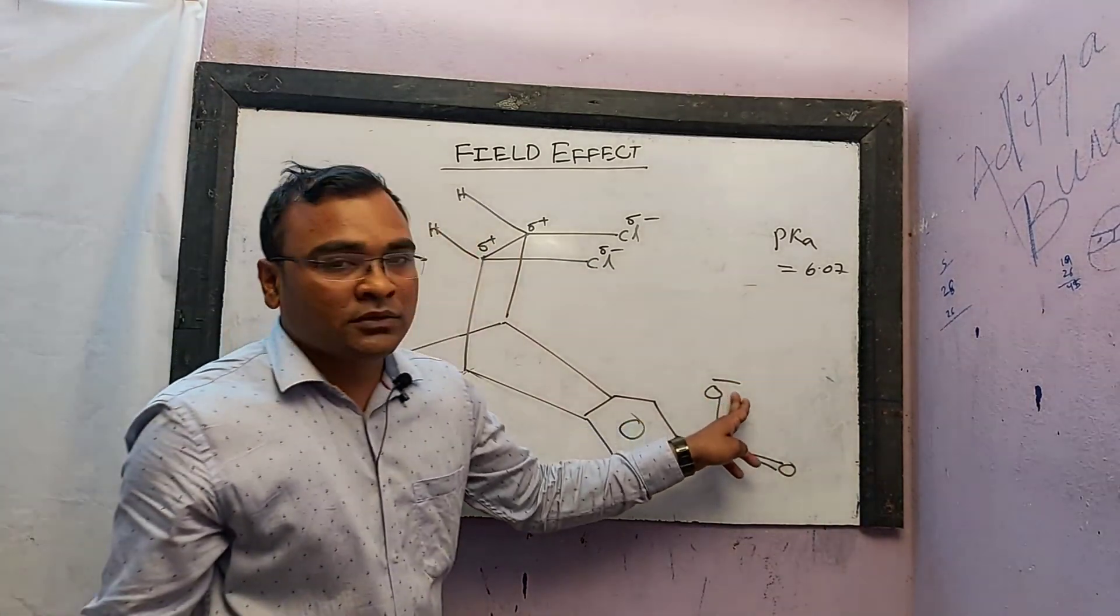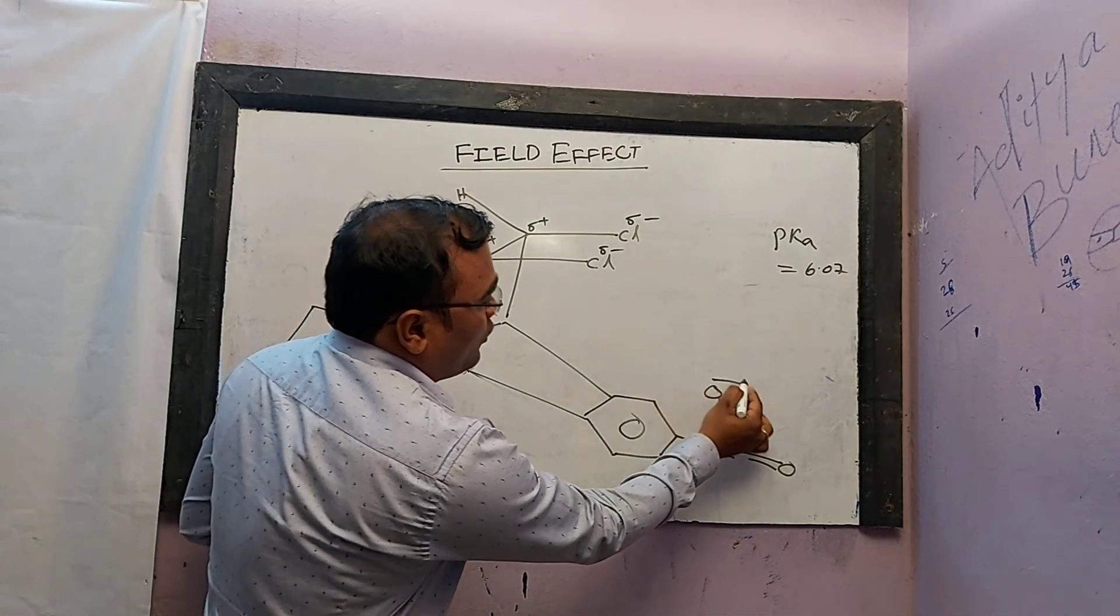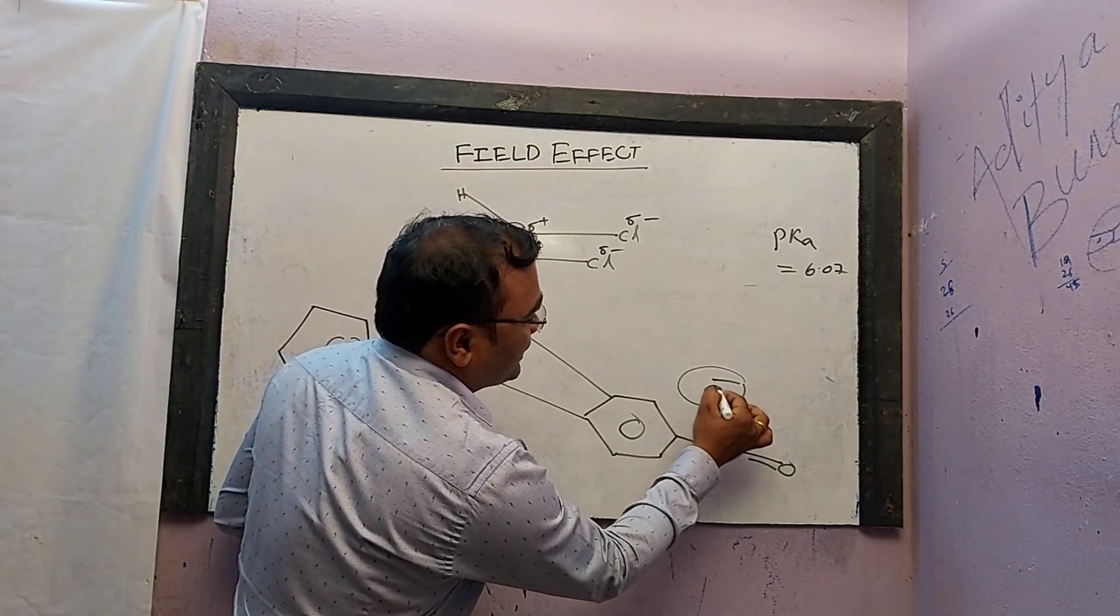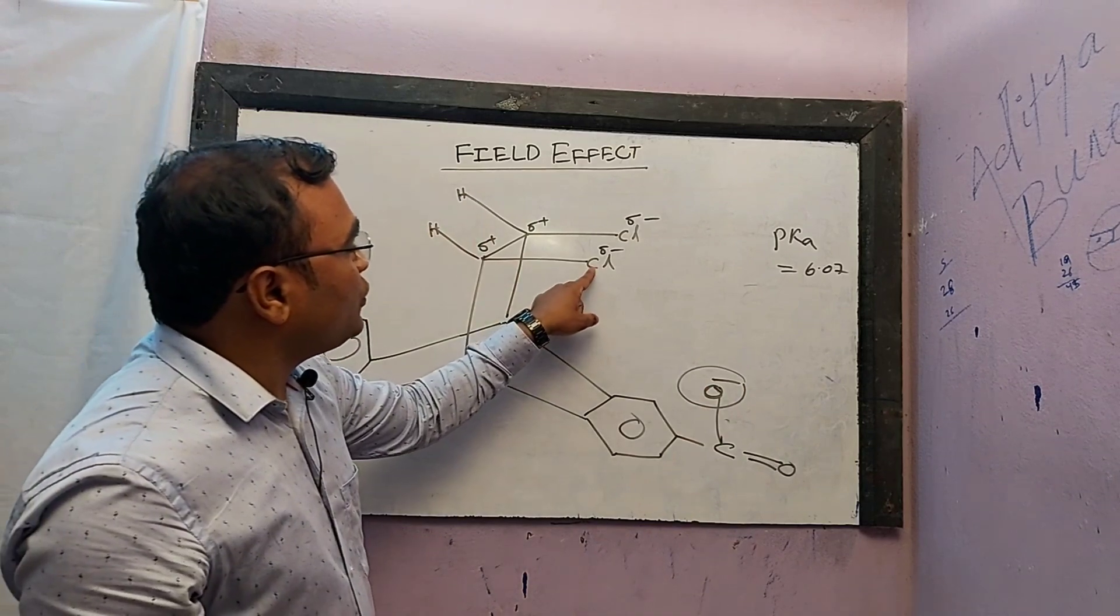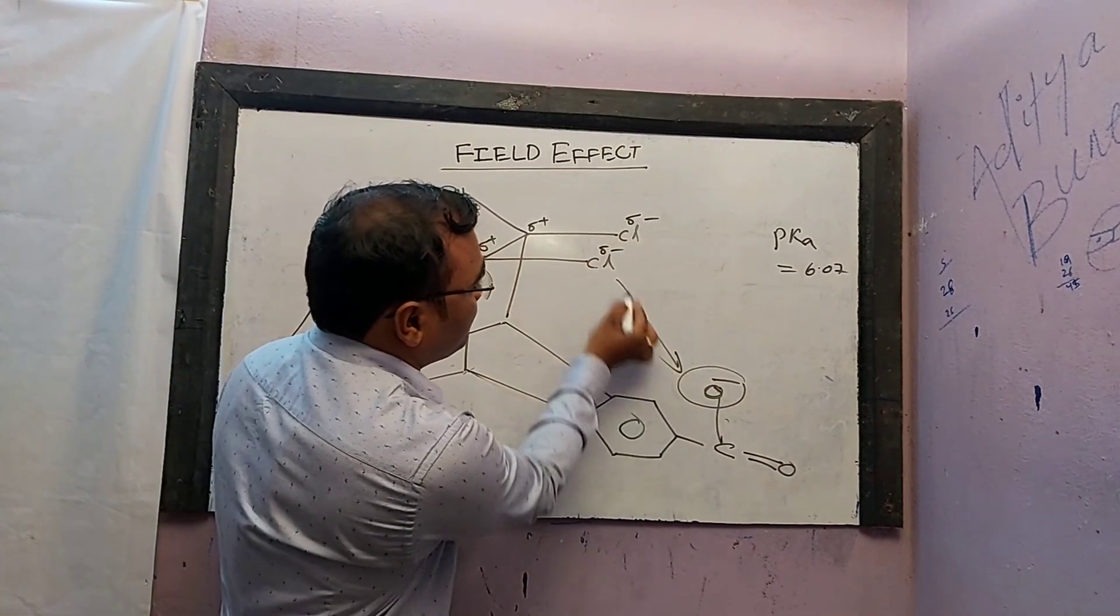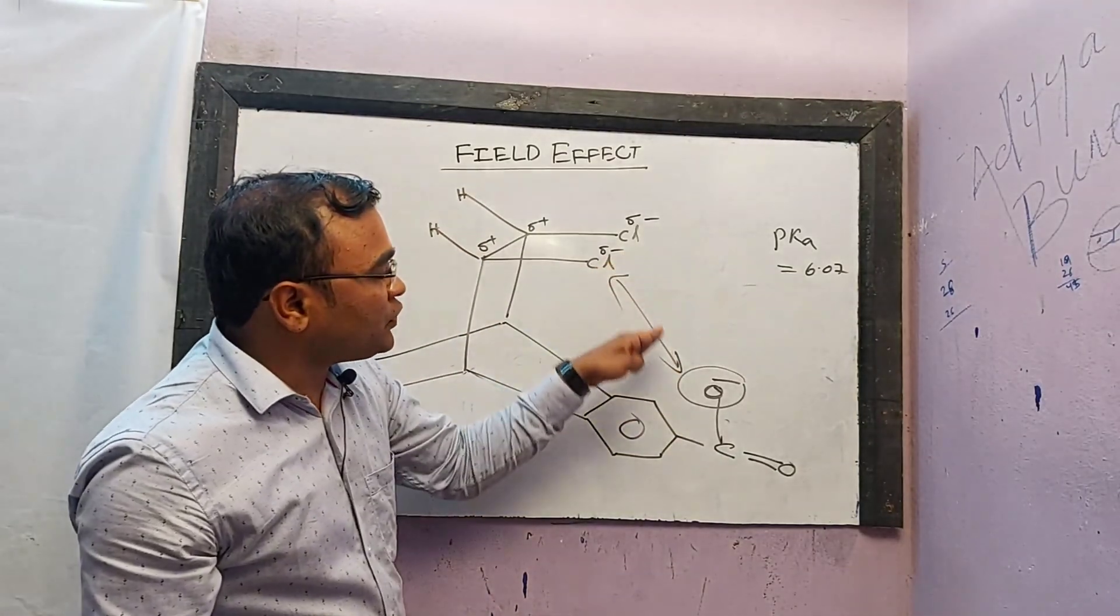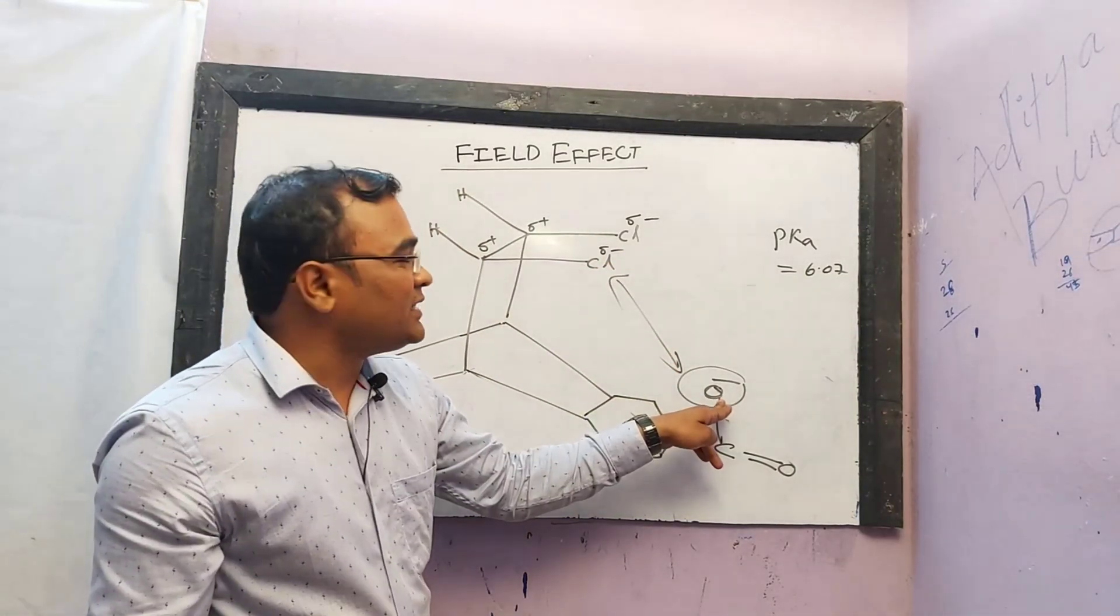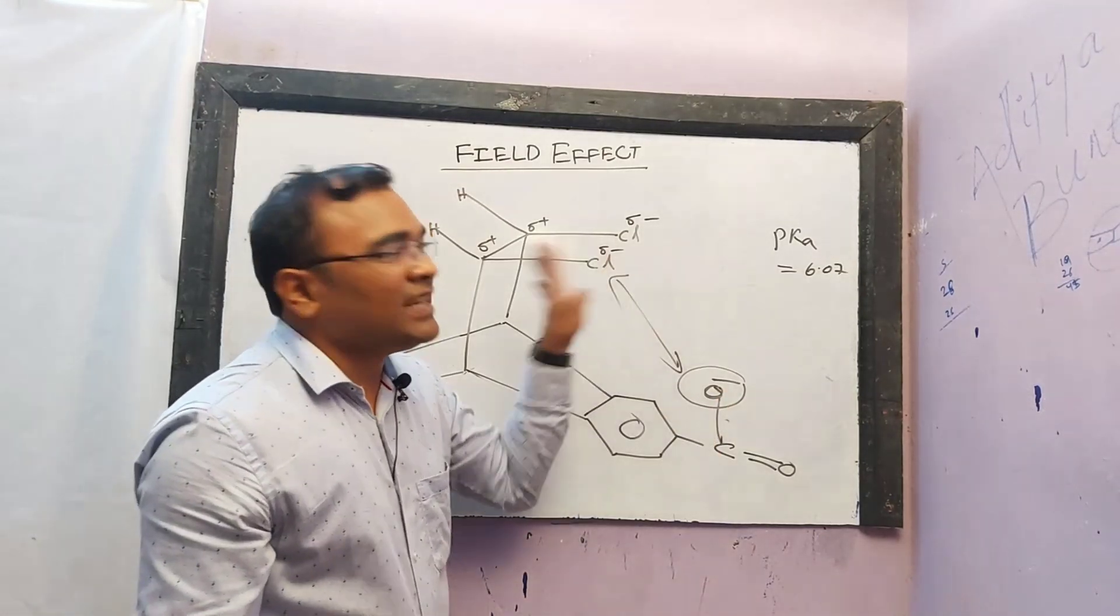This is O minus. Here, the O minus ion is repelled by the two negative ends of the C-Cl bond. It happens in the space. So the conjugate base is unstable, so this is less acidic.